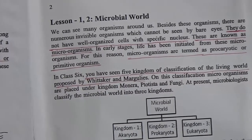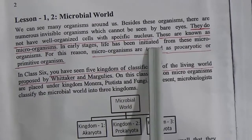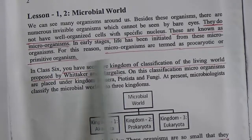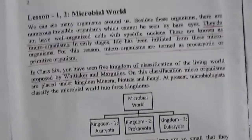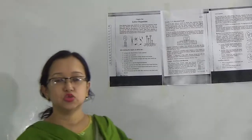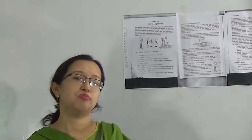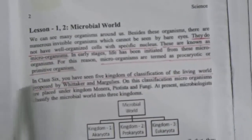In early stages, life was initiated from these microorganisms. For this reason, microorganisms are termed prokaryotic or primitive organisms. 'Primitive' means they are very ancient, and 'prokaryotic' means their cell is not properly organized and they have no specific nucleus.